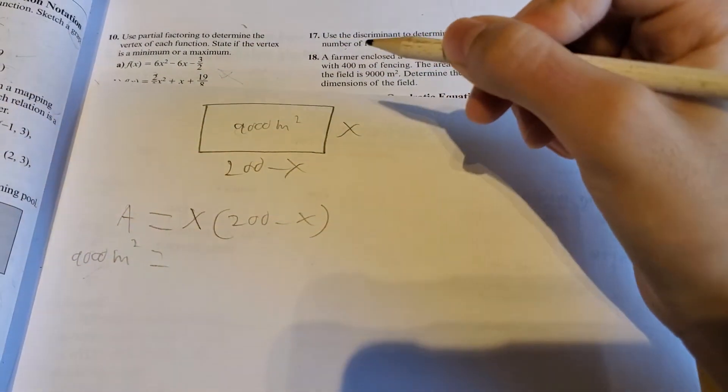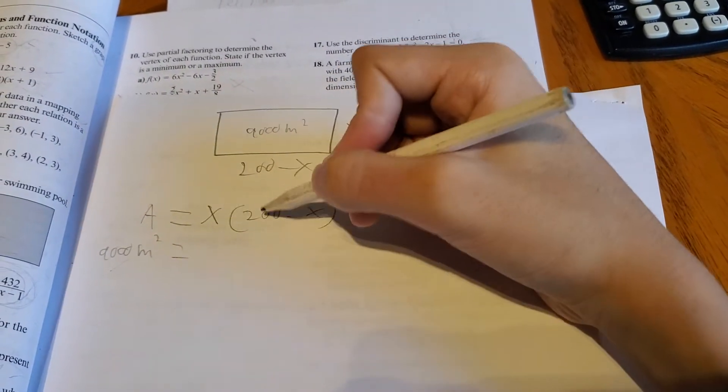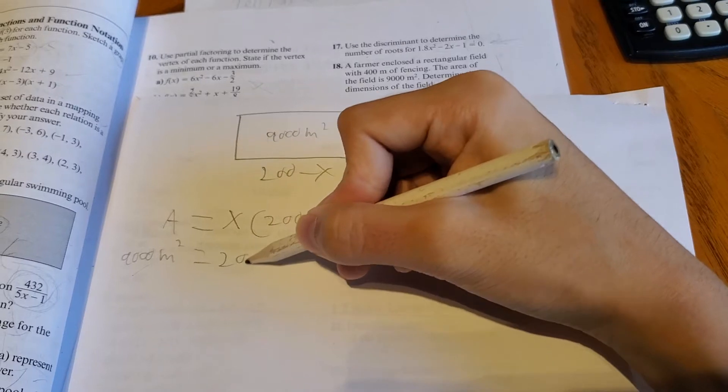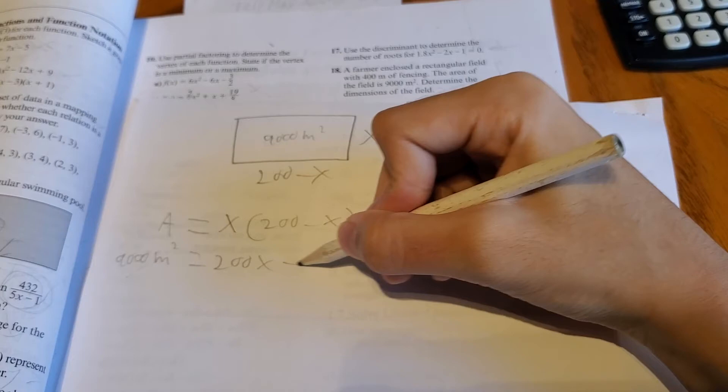Equals. And then we can expand this out. x times 200 is 200x, and x times negative x is negative x squared.